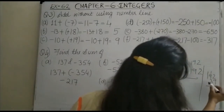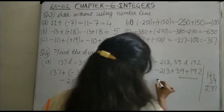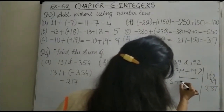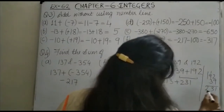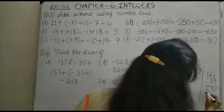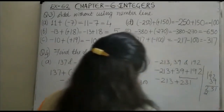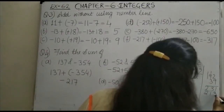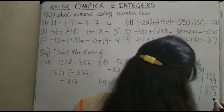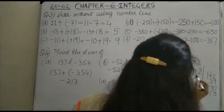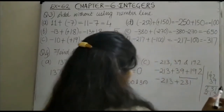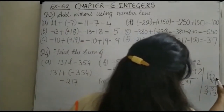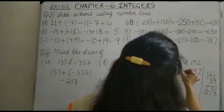So this gives 231. Now you have -213 + 231. Subtract 213 from 231.